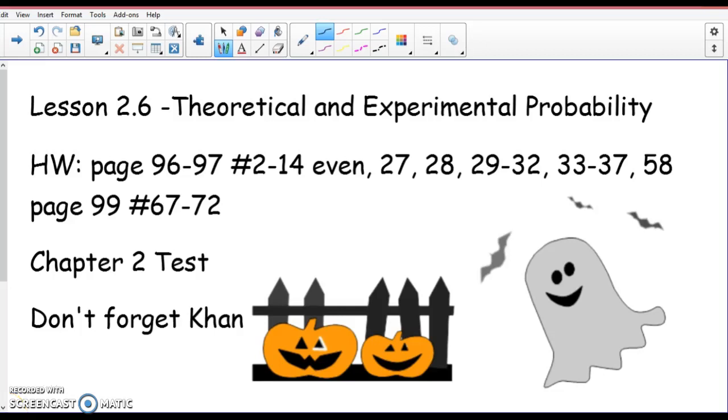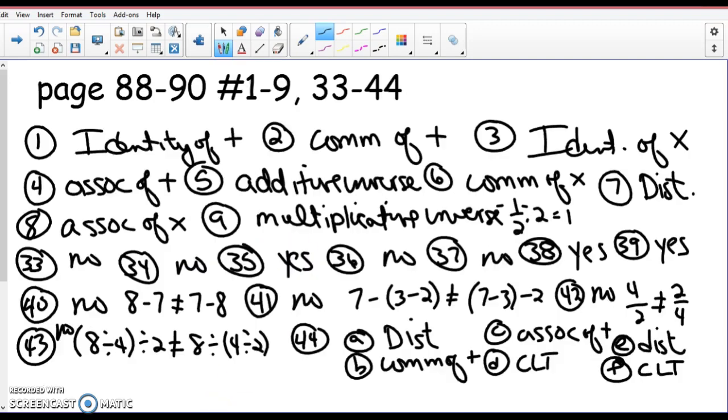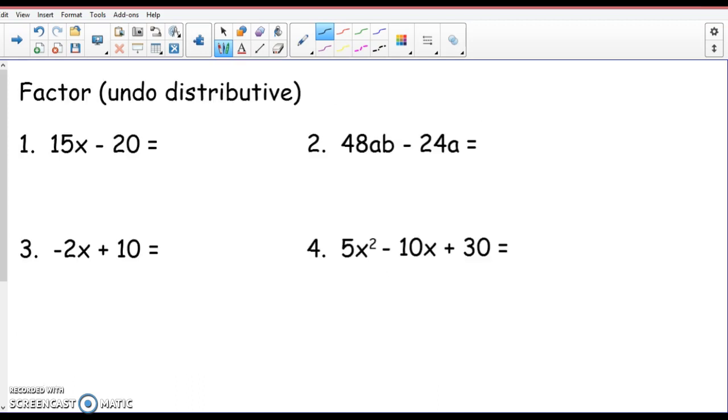Alright, today's lesson is 2.6 Theoretical and Experimental Probability. Here's the homework that goes along with it. This chapter 2 text is not covered yet. I don't know why I don't have it yet. Alright, here's the answer to this black knife cover. You'll want to pause it and check that.